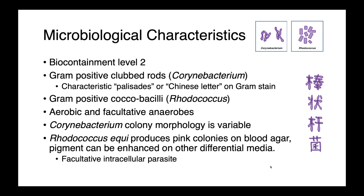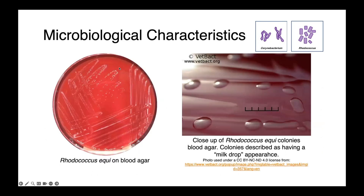This pigment can be enhanced using differential media. Importantly, Rhodococcus equi is a facultative intracellular parasite. Here you can see a pure culture of Rhodococcus equi on blood agar at a macro level and then up close. The colonies are white and somewhat wet-looking, described as having a milk drop appearance.